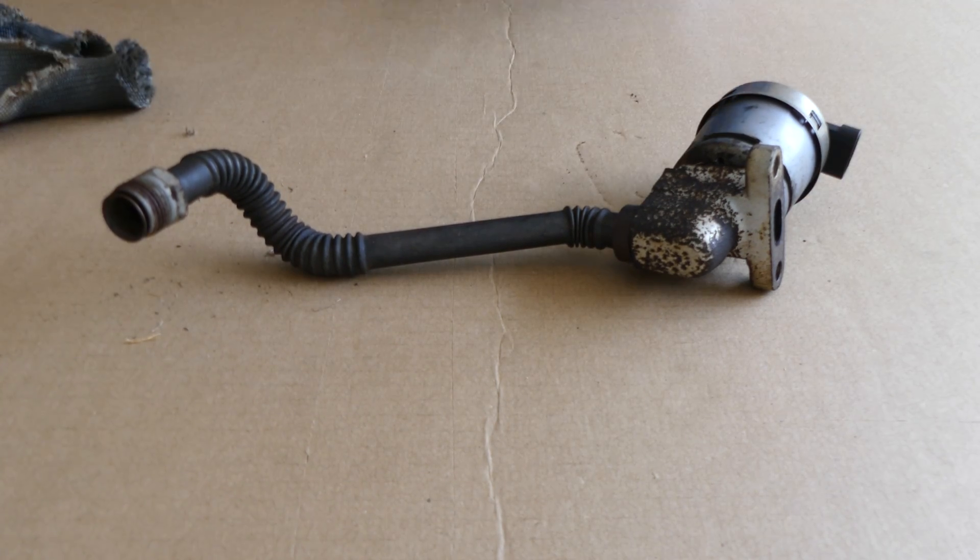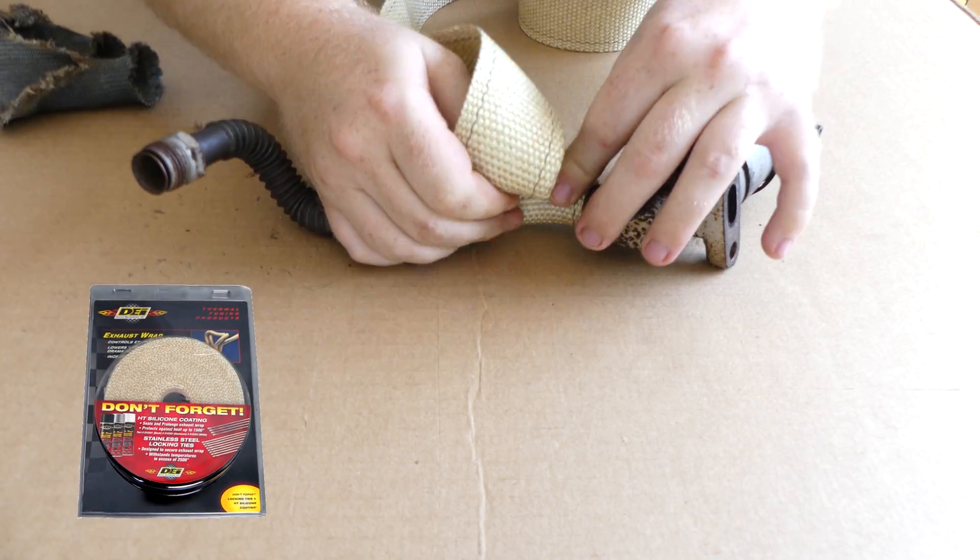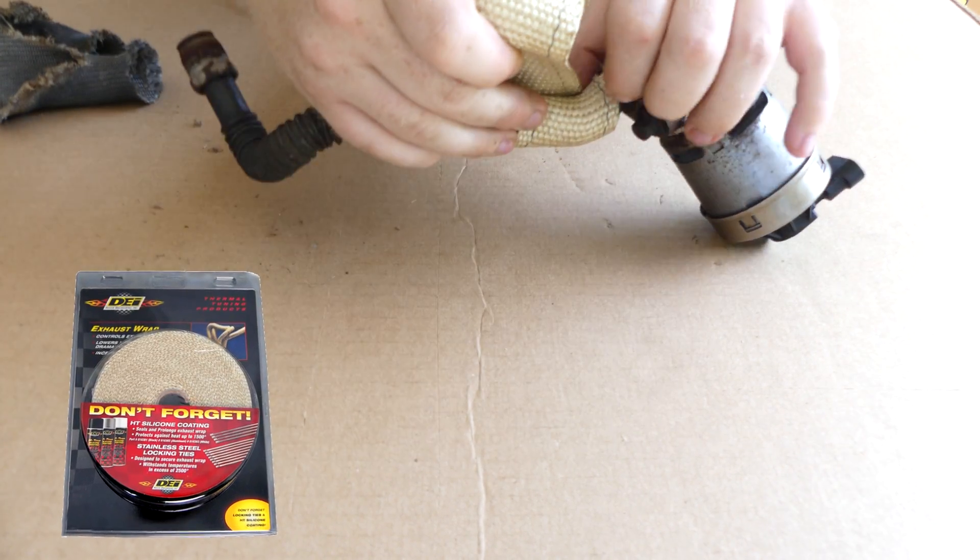Alright, it looks good. Now we're going to put on this thermal shielding. This is normally meant for larger diameter tubing.